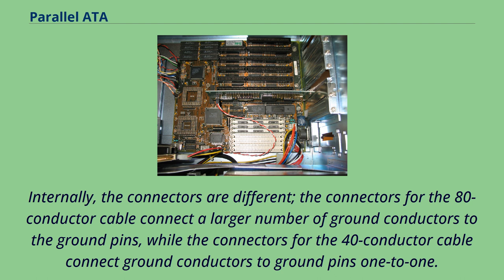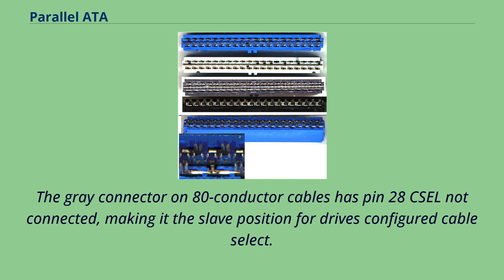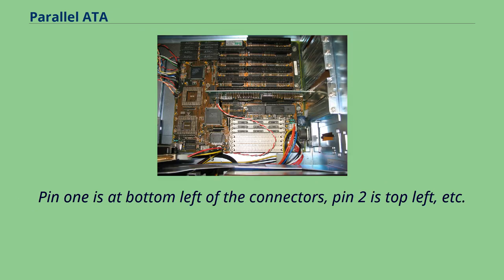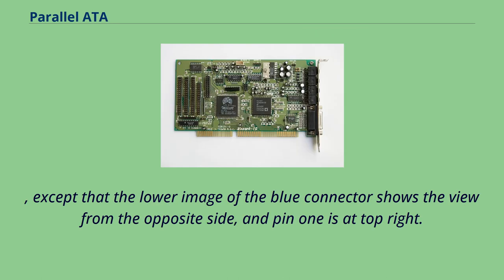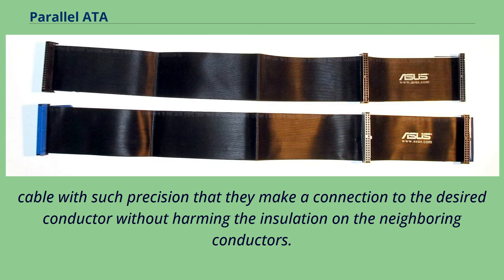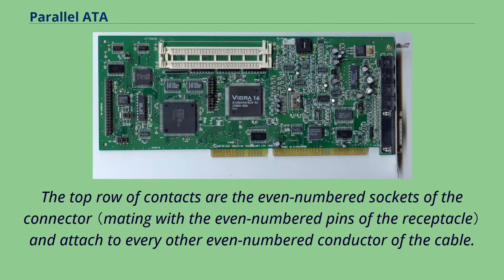80-conductor cables usually come with three differently colored connectors, as opposed to uniformly colored 40-conductor cable connectors. The gray connector on 80-conductor cables has pin 28 shell not connected, making it the slave position for drives configured as cable select. The image shows PATA connectors after removal of strain relief, cover, and cable. Pin 1 is at bottom left of the connectors, pin 2 is top left, etc. The connector is an insulation displacement connector; each contact comprises a pair of points which together pierce the insulation of the ribbon cable with such precision that they make a connection to the desired conductor without harming the insulation on the neighboring conductors. The center row of contacts are all connected to the common ground bus and attached to the odd-numbered conductors of the cable.